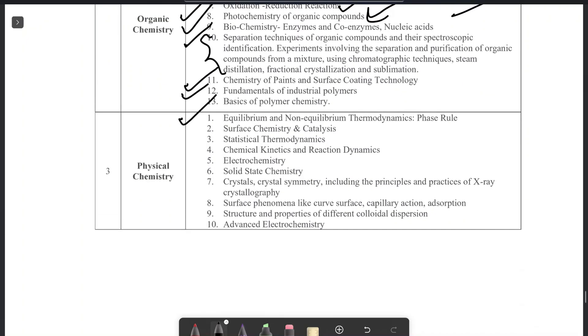Now we have physical chemistry. The very important book of physical chemistry is McQuarrie-Simon. There are two books for McQuarrie-Simon. One is quantum chemistry, another is the pure physical chemistry book. So equilibrium, non-equilibrium, McQuarrie-Simon. Statistical thermodynamics, you can read from Engel and Reid. Chemical kinetics from McQuarrie-Simon. Spectroscopy, you can read from Engel and Reid. Solid state chemistry, Engel and Reid. Crystallography, Engel and Reid. Surface phenomena, advanced electrochemistry, and the surface chemistry, catalysis, Engel and Reid.